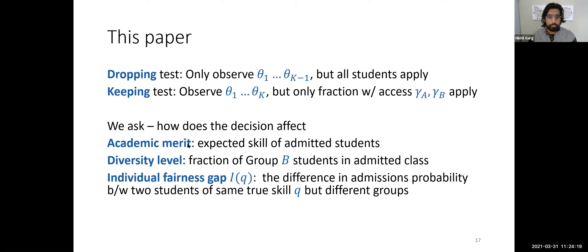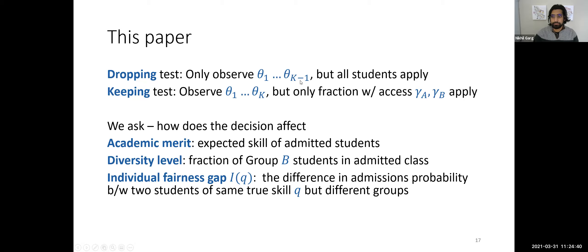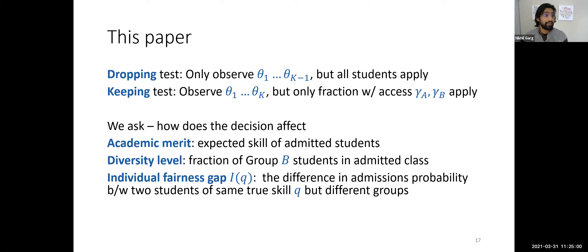This is of course an extremely stylized model. What we believe it's useful for is trying to quantify this trade-off between one extra piece of information and the access barriers — in a stylized setting or standard machine learning context, what is the effect on the downstream decision if we have to trade off getting more data per observation versus getting more observations.